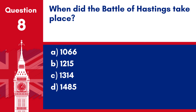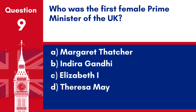Answer: a. 1066. The Battle of Hastings was a pivotal moment in English history, leading to Norman rule over England.